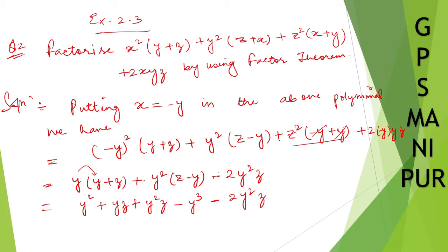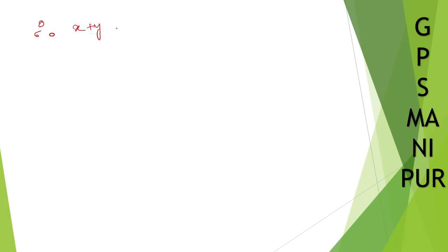So y squared into minus y gives minus y cubed, and y cubed and minus y cubed cancel. Then yz, y squared z and y squared z — these two make 2y squared z — and 2y squared z cancels. So the result is 0. Therefore, since we put x equal to minus y, we can say x plus y is a factor of the given polynomial.